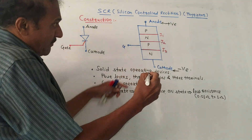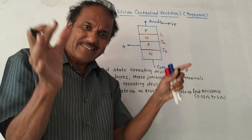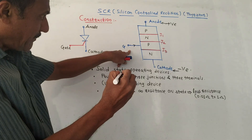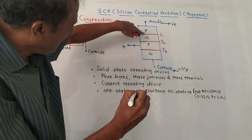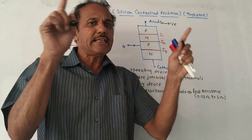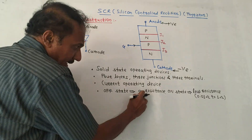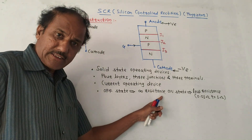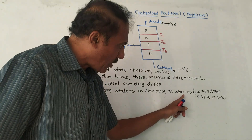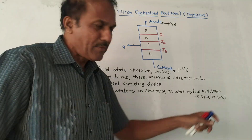Whenever we apply a certain positive current at the gate terminal, junction J2 — which is between the first N-layer and second P-layer — becomes forward biased and the SCR is turned on. Whenever the SCR is turned off, it provides ideally infinite resistance, whereas when it is turned on it offers low resistance, typically between 0.01 ohm to 1 ohm.